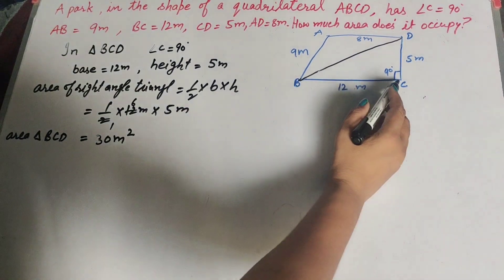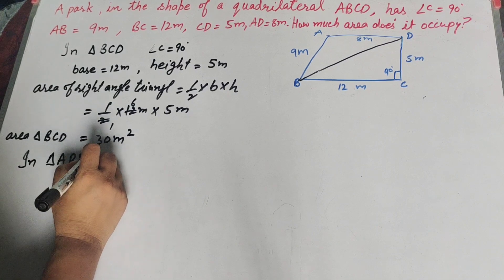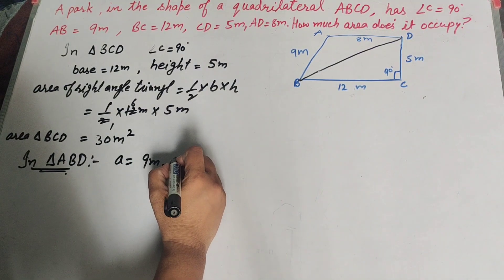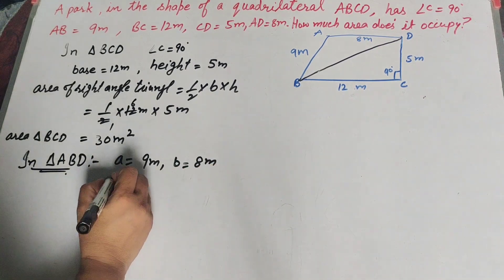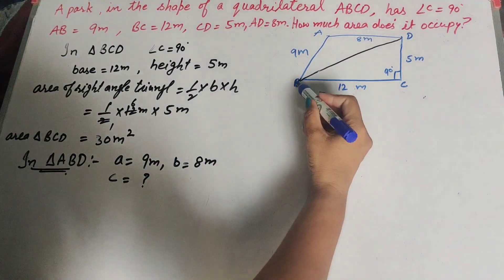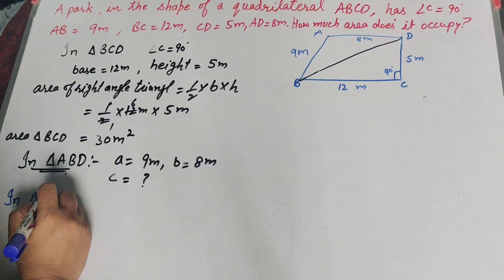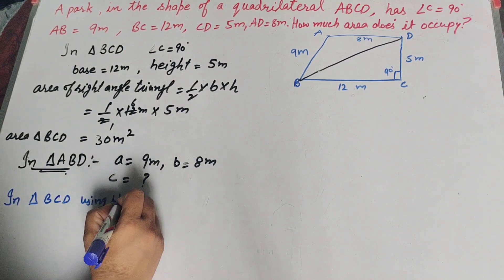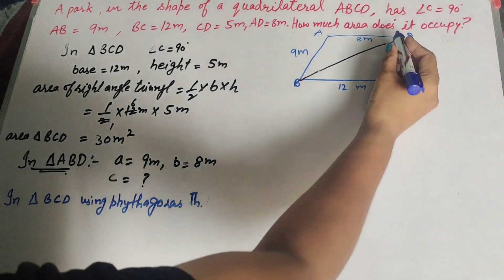Now we find the area of the other triangle ABD. In triangle ABD, two sides are given: side a equals 9 meters and side b equals 8 meters. We need to find the third side BD. In triangle BCD, we use the Pythagorean theorem since triangle BCD is a right angle triangle: BC squared plus CD squared equals BD squared.